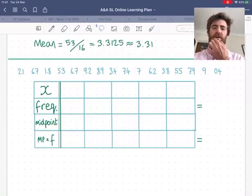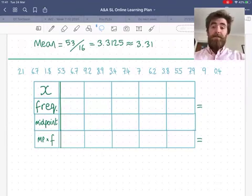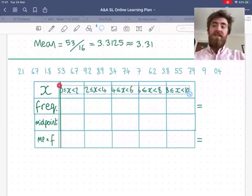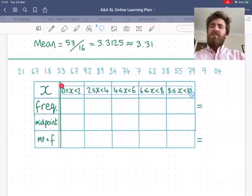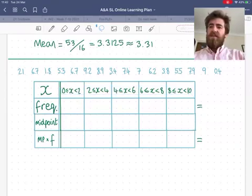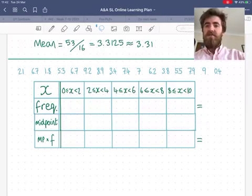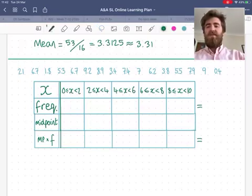So what can we do? We can say a range or an interval that each number falls in between like I've done here. I could say how many between 0 and 2? How many between 2 and 4? And so on.